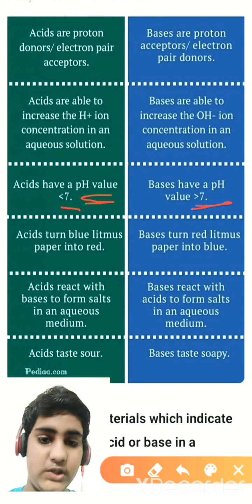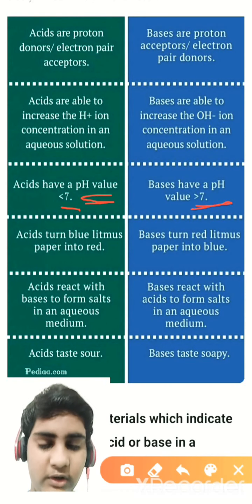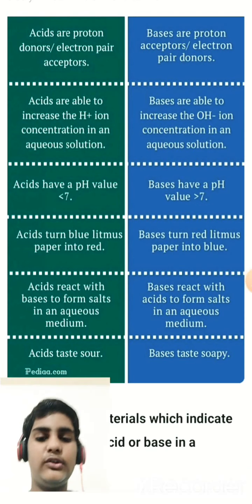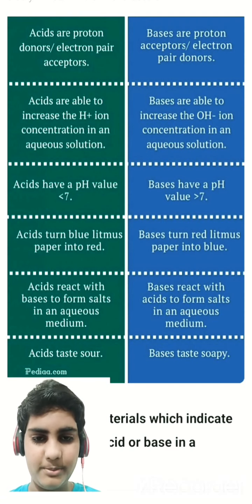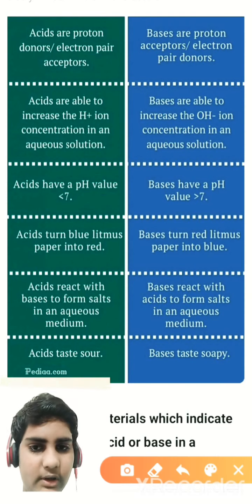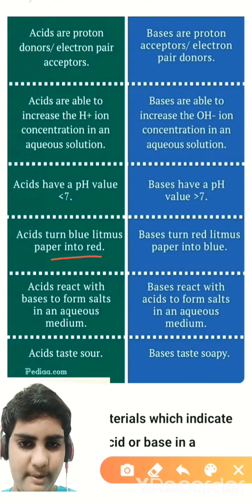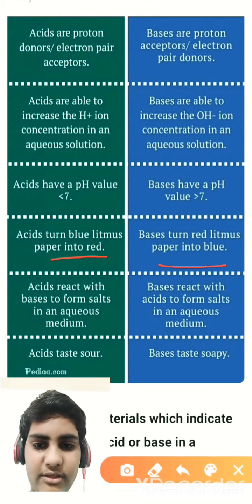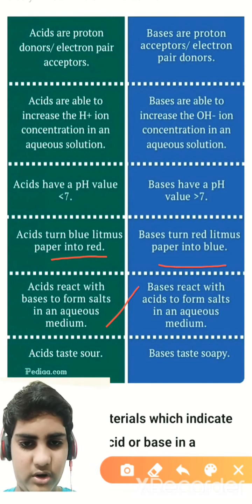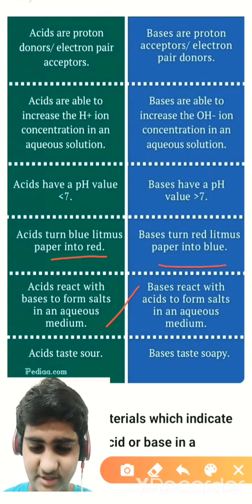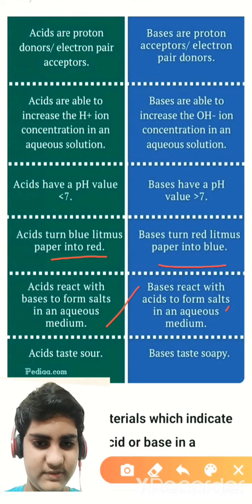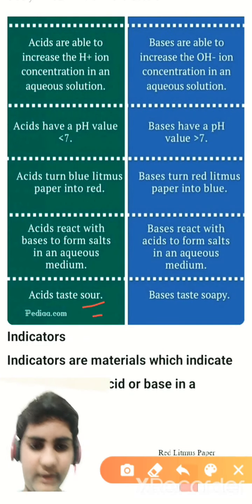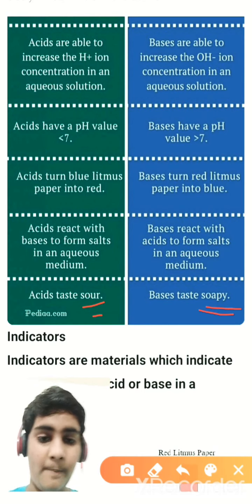pH value is important in daily life and is included in the chemistry chapter on acids, bases, and salts. To review: acids turn blue litmus paper red; bases turn red litmus paper blue. Acids react with bases to form salts in aqueous media, and bases react with acids to form salts. Acids taste sour and bases taste soapy or bitter.